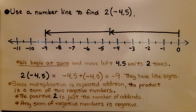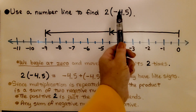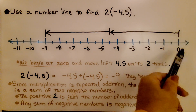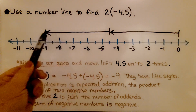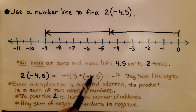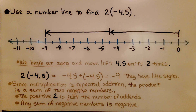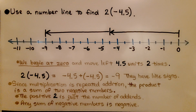Here it's telling us to use a number line to find two times negative four and five-tenths. We begin at zero, and we have negative four and five-tenths two times. We go negative four and five-tenths — that's negative four and a half — then do another 4.5, which puts us at negative nine. Two times negative four and five-tenths equals negative four and five-tenths plus negative four and five-tenths, which equals negative nine. Since multiplication is repeated addition, the product is a sum of two negative numbers. The positive 2 is just the number of addends — any sum of negative numbers is negative, so we have a negative product.